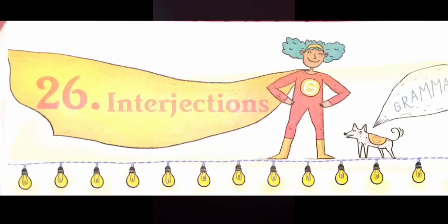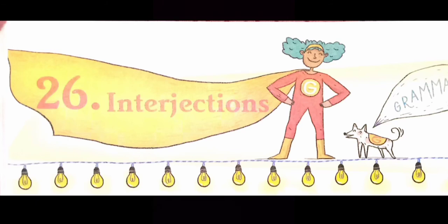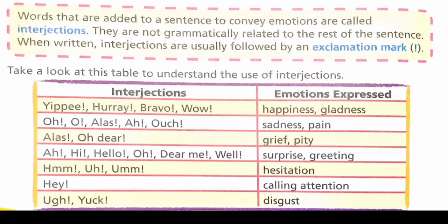Now let's move to the next chapter. Chapter 26, Interjections. What is an interjection? An interjection is a part of speech that expresses emotion. It is one of the nine parts of speech. An interjection is a short word or phrase that shows emotions, and it often stands alone, unconnected to a sentence.